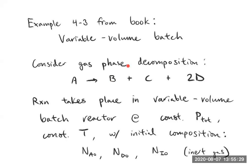It's a gas-phase decomposition reaction where A goes to B and C and forms 2D. The reaction takes place in a variable volume batch reactor at constant total pressure. As the pressure would otherwise increase, we let the container expand instead. We're keeping things at constant temperature, and the initial composition has some moles of A, some moles of D, no moles of B or C, and an inert gas — included just to show how you would treat that.